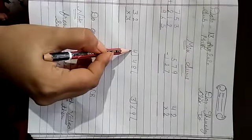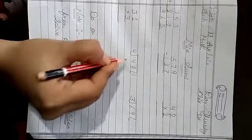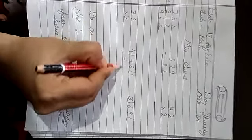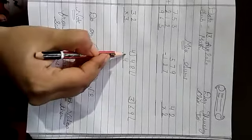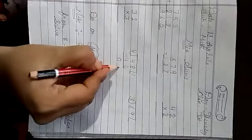We read the table of 4. 4 times 0 is 0, 4 times 1 is 4. Then make a line. 4 minus 4. 0 comes. Then this 8 comes down side.